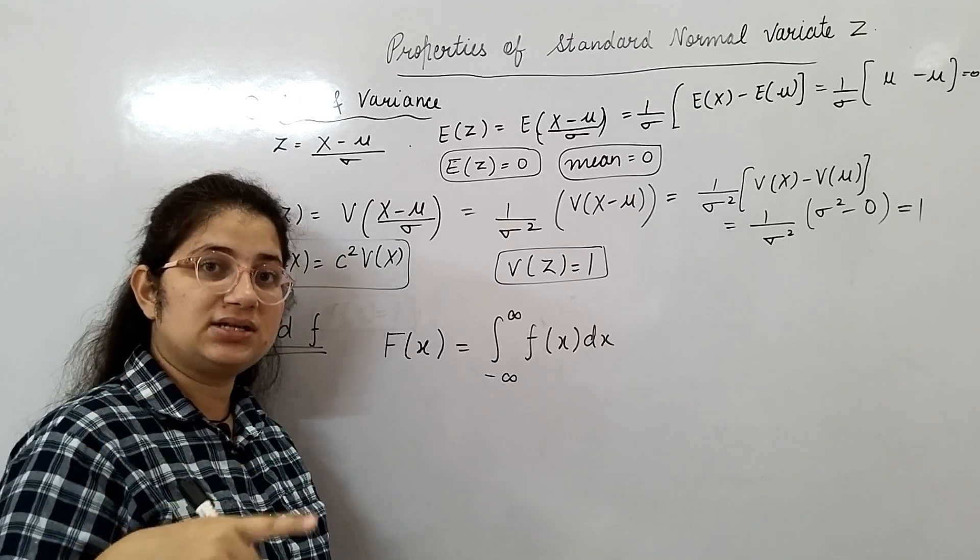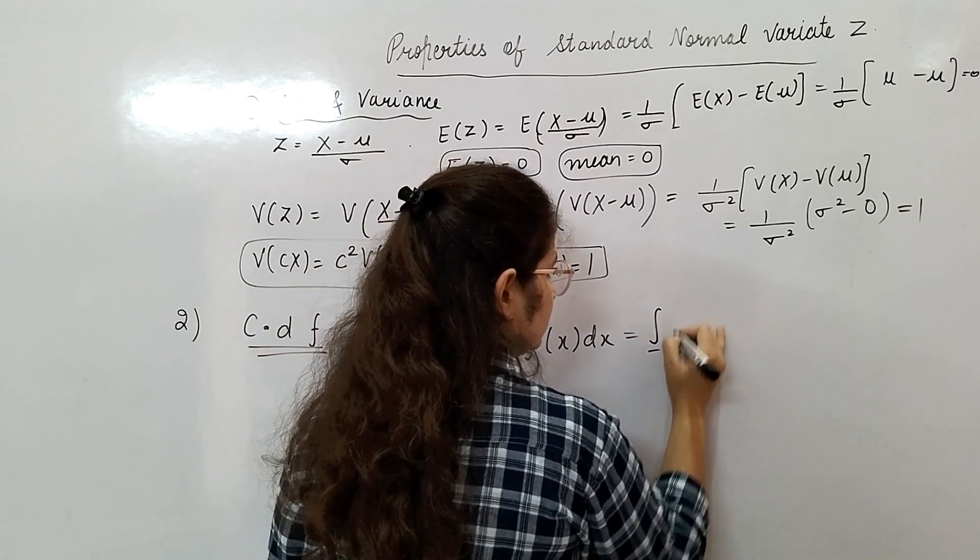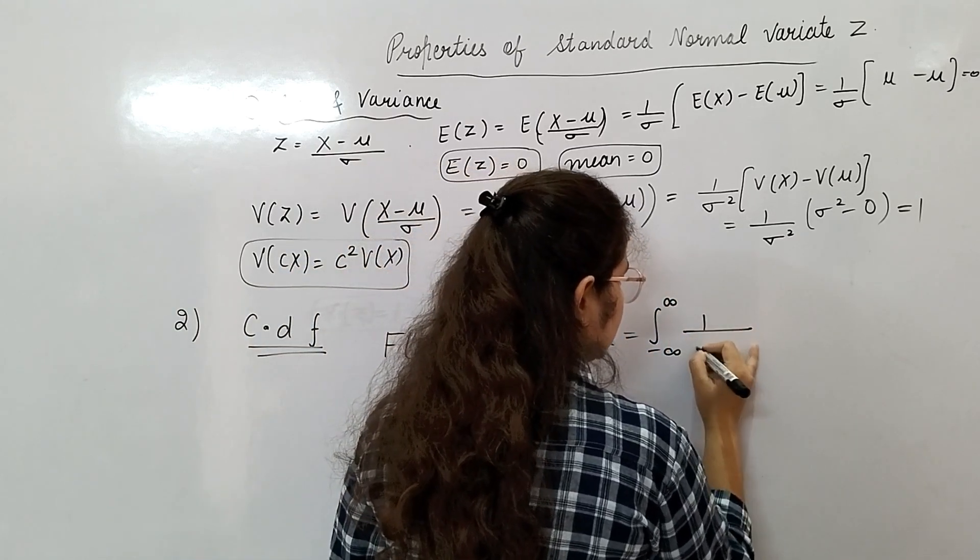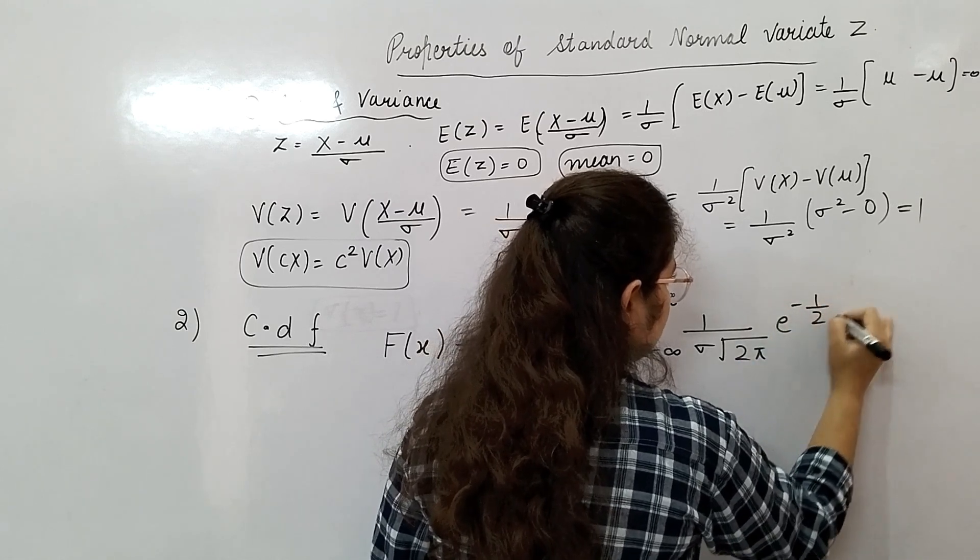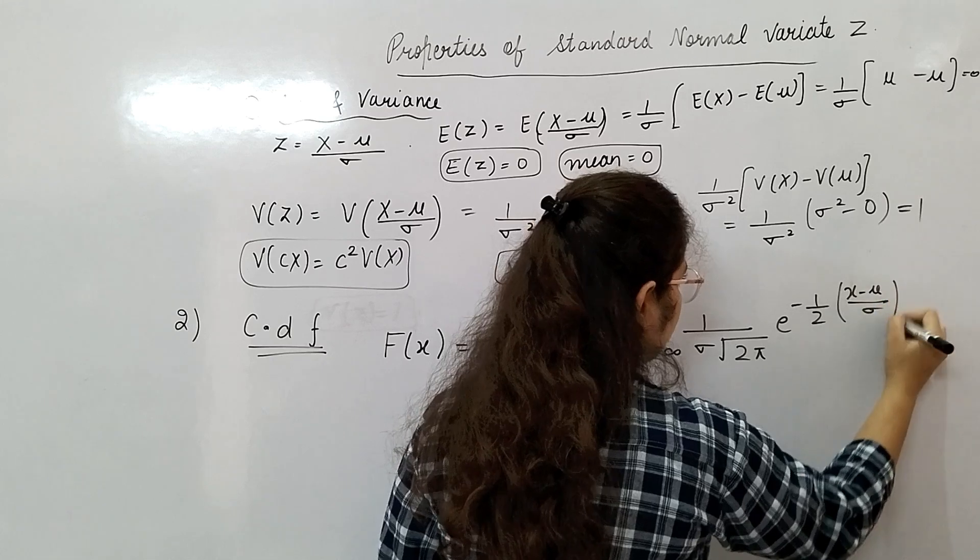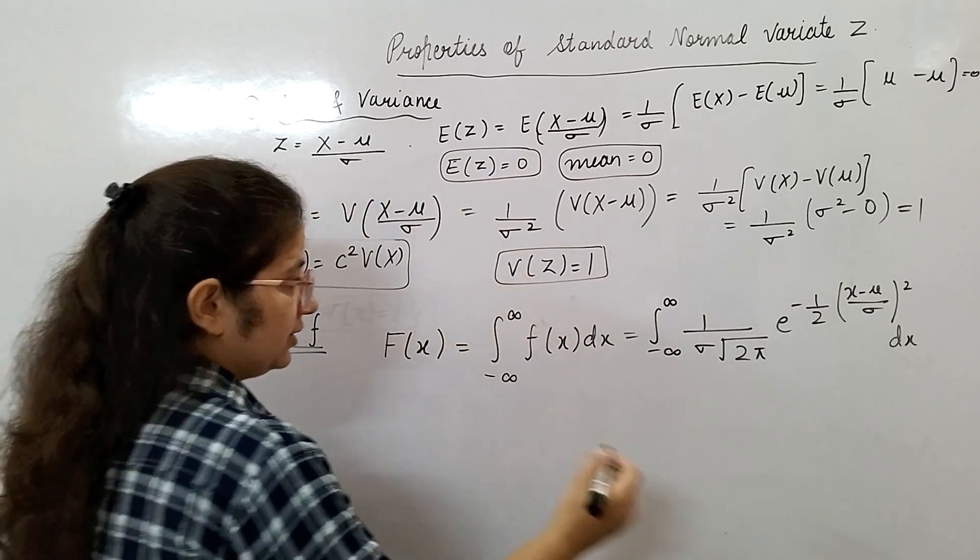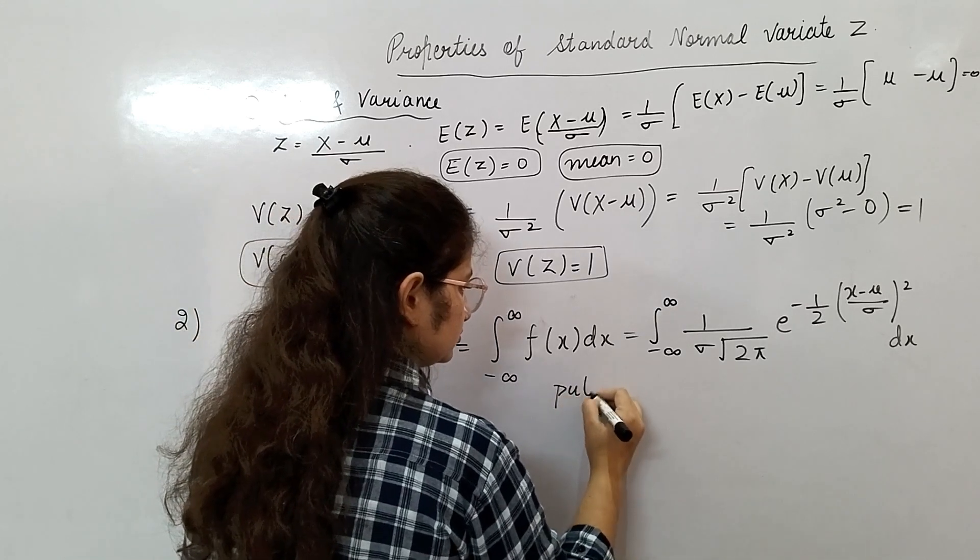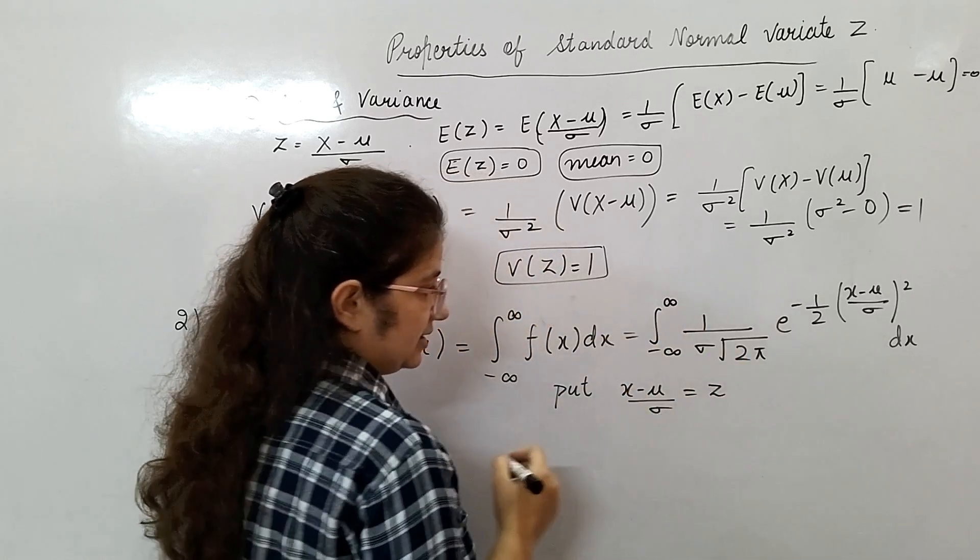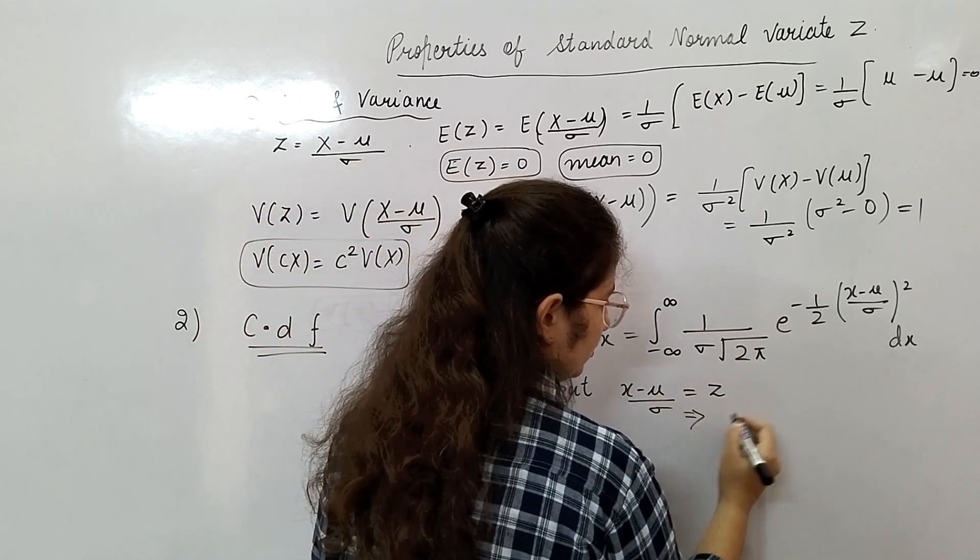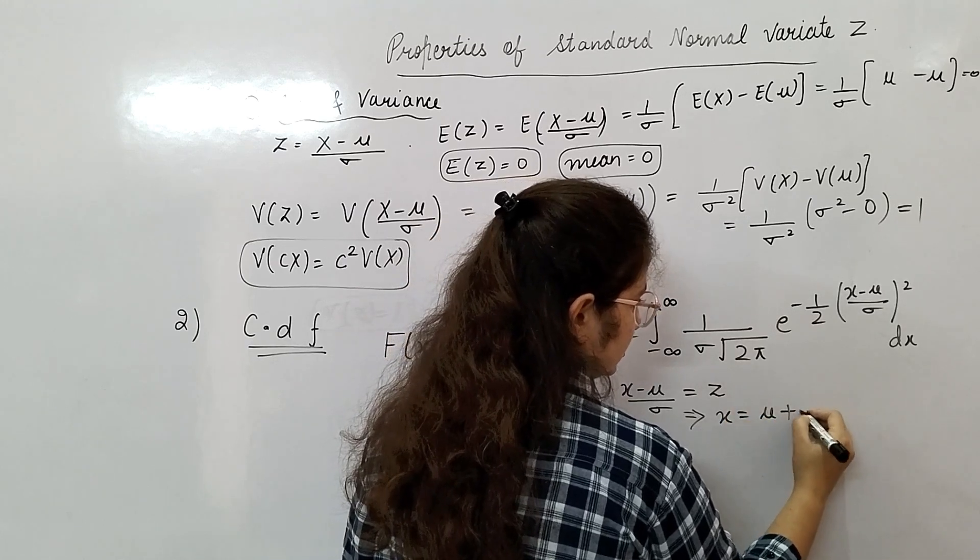F of X, dx. Why I have taken this limit minus infinity to infinity? Because in definition your X is varying from minus infinity to infinity. Put the value minus infinity to infinity 1 upon sigma root 2 pi e to the power minus 1 by 2, X minus mu by sigma whole square dx.